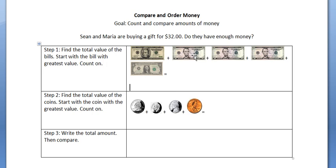Below we see the bills and coins that Sean and Maria have. Step 1 will be to find the total value of the bills. We will start with the bill with the greatest value and count on.